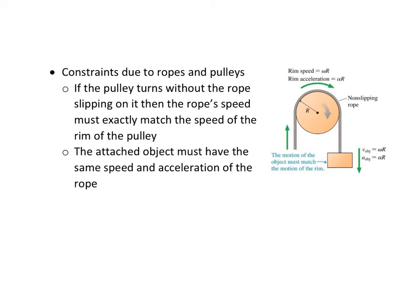See how this is alpha r and omega r? That's just referring to our linear acceleration. Remember a was r alpha, our linear velocity was r omega. The speed of any point on the rim of a pulley is going to equal the speed of the rope and therefore the speed and acceleration of the object.